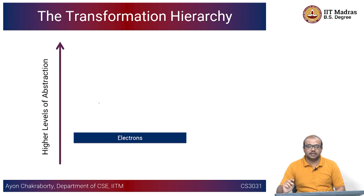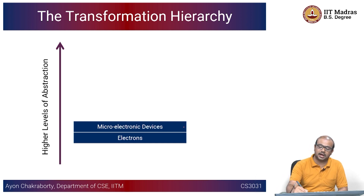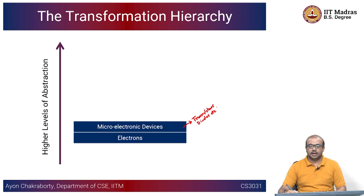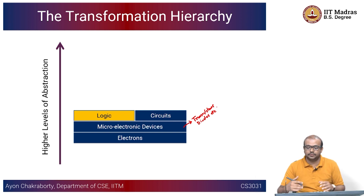Basically, electrons are the ones that are manipulated by some devices which are called microelectronic devices. These microelectronic devices restrict or encourage the flow of electrons. Typically, these are things like transistors or diodes. These microelectronic devices can control or orchestrate the flow of electrons. And on top of these microelectronic devices, we build things called circuits — these transistors, diodes, and related components are used for creating circuits.